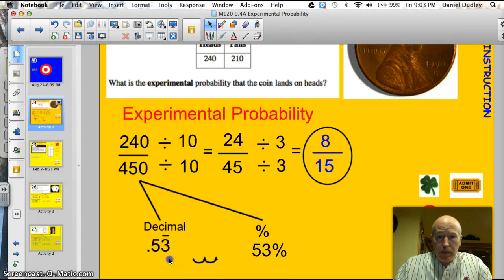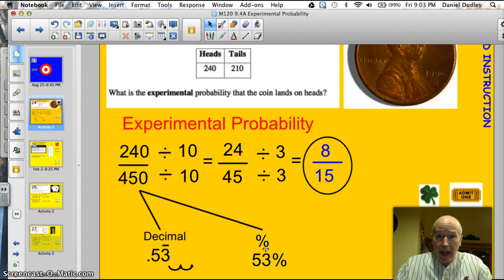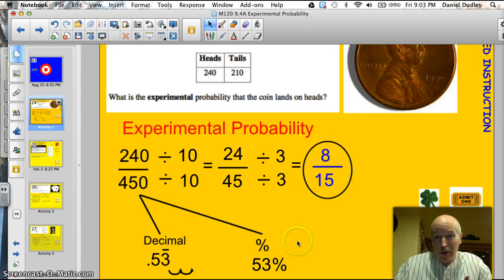If I take and move that decimal over two places, I get 53%. So I can express it as a fraction, as a decimal, or a percent. But the actual experimental probability was about 53%, or 8/15. We would have expected it to be exactly 50-50, right? That doesn't always happen.